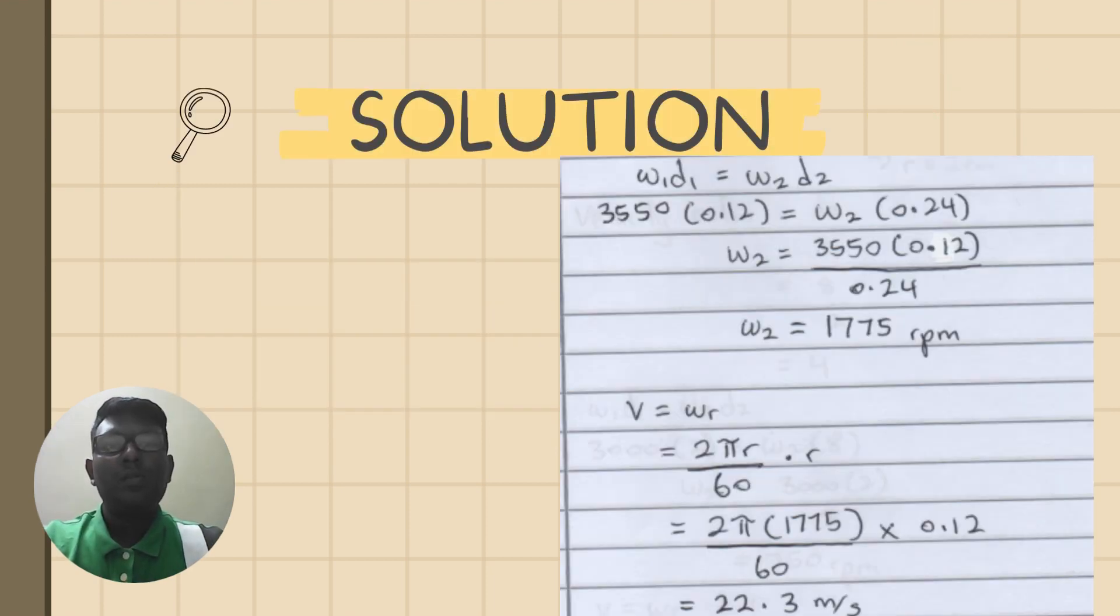In this solution, we use the formula of motor diameter times the speed rate of motor equals the speed rate of compressor times the diameter of compressor to find the speed operation of the compressor.